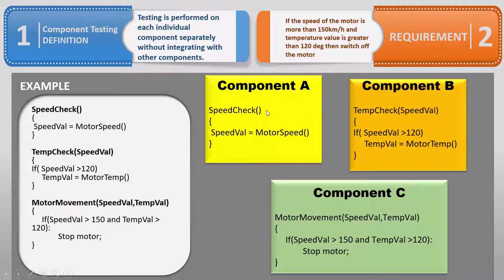So as you see, there are three components in this code that need to be independently tested. Under component testing, there is no relationship between component A and B or A and C or B and C. They are all just individual units here. When we perform testing on each of these, it's called component testing.